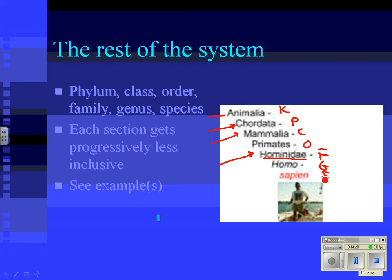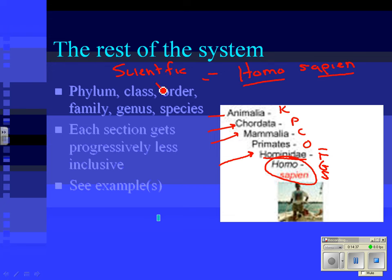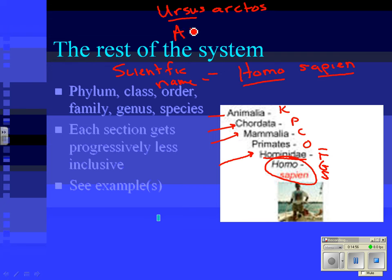The last part — the genus and species name together — gives us the scientific name. Homo sapiens, underlined, is the scientific name for humans. A polar bear is Ursus arctos. A maple tree is Acer — and a red maple is Acer rubrum. The genus name comes first, then the species name.